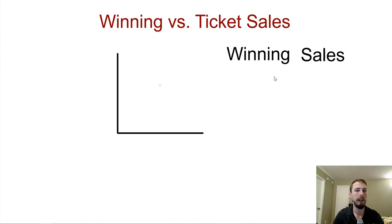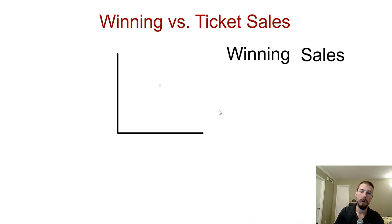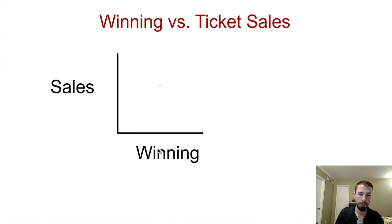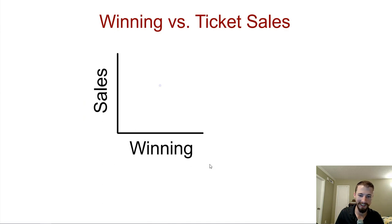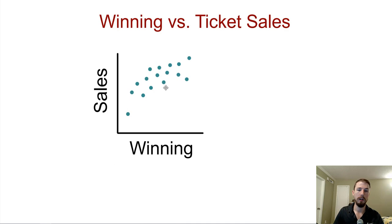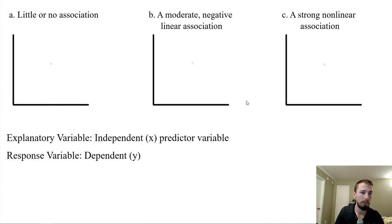Is winning driving sales or is sales driving winning? It might go both ways — if you have more fans in the crowd you might feel more support and win more, or you win more so you get more fans. I think the more natural choice is to see how sales respond to winning, which is something we can control more. I thought the shape might be curved — at the beginning winning makes a big difference, but after a while you max out the fans who would come anyway, so it tapers off.